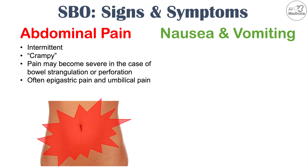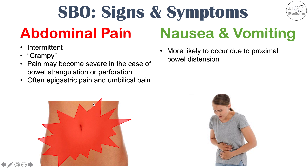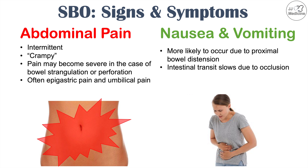Other signs and symptoms include nausea and vomiting. Nausea and vomiting are more likely to occur due to proximal bowel distension — meaning the part of the small intestine closest to the stomach, particularly the first part known as the duodenum. Although it can occur with other parts of the small intestine being affected, it's more likely with proximal involvement. The reason is that intestinal transit slows due to occlusion, and nausea and vomiting are relatively common, occurring in 60 to 70% of patients.